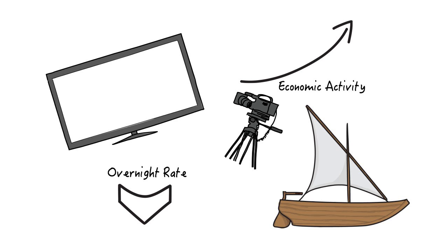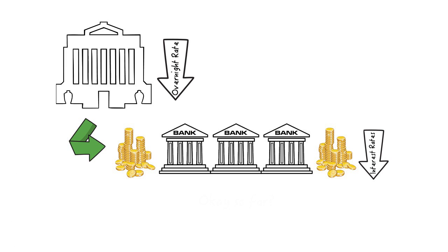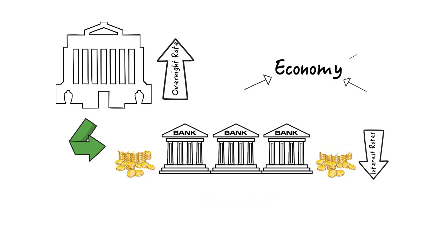Sometimes, the bank may want the economy to slow down a bit. The operation is almost the same but in reverse. The bank will increase the overnight rate, and this leads to reduced spending and slower economic growth.